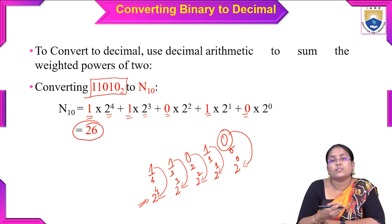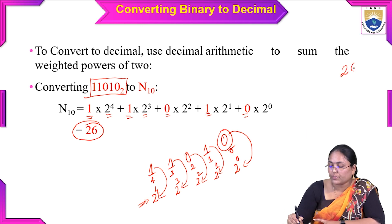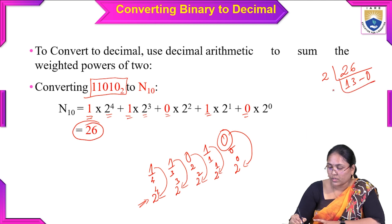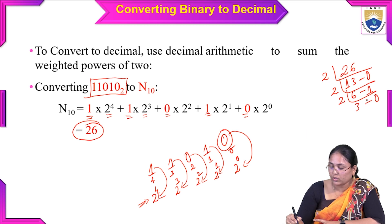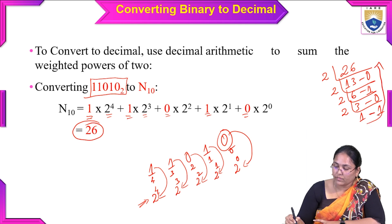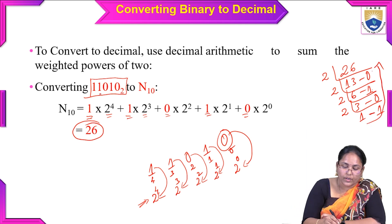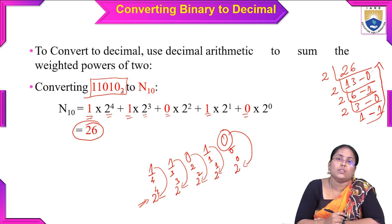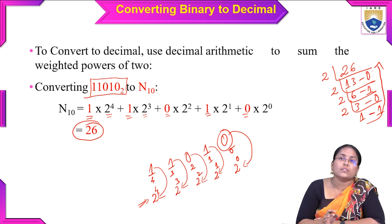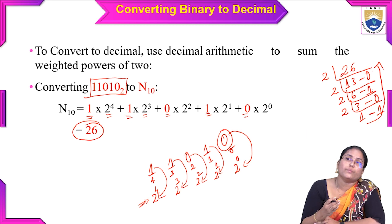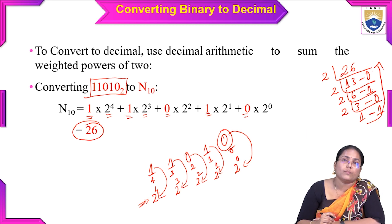To verify: converting 26 back to binary by repeated division — 26 ÷ 2 = 13 r0, 13 ÷ 2 = 6 r1, 6 ÷ 2 = 3 r0, 3 ÷ 2 = 1 r1, 1 ÷ 2 = 0 r1 — gives 11010 in binary, confirming the result. This is one method to convert binary to decimal.